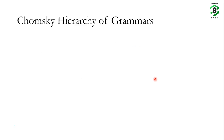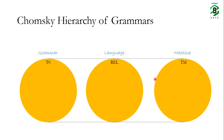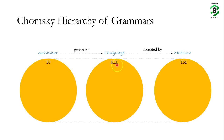The Chomsky hierarchy of grammars starts with the type 0 grammar. The corresponding language is the recursively enumerable language and the corresponding machine is a Turing machine. A grammar produces or generates a language, which is in turn accepted by a machine. So the type 0 grammar produces the recursively enumerable language, which is accepted by a Turing machine.